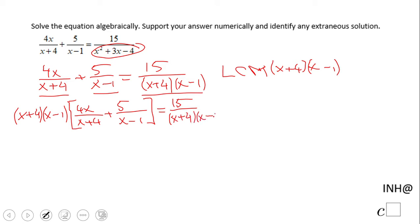We need to multiply by the same least common multiple, x plus 4 times x minus 1. And now we're going to do the distributive property here.